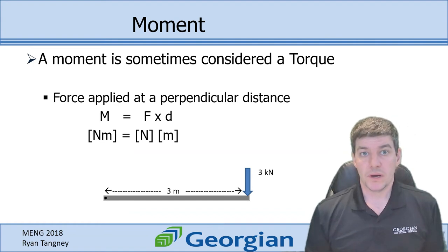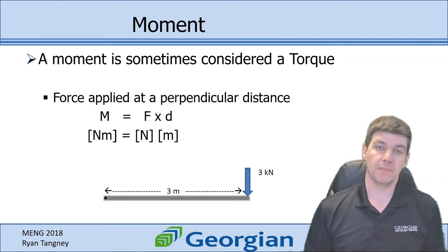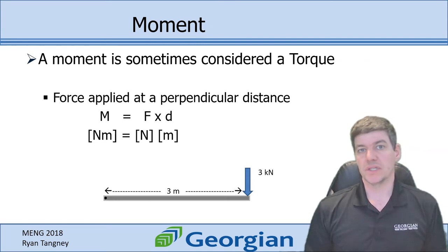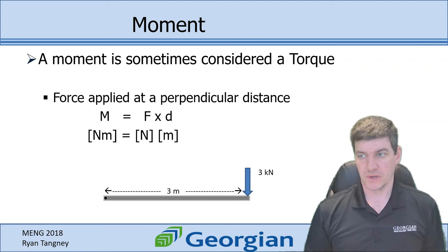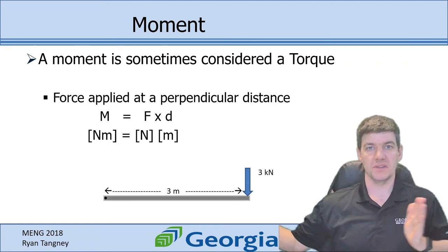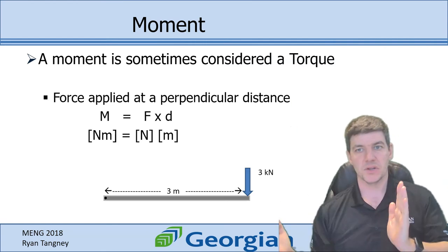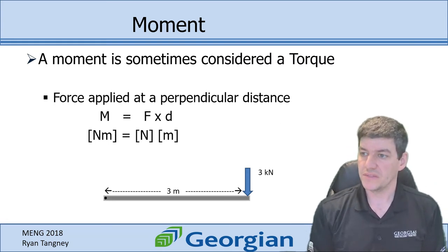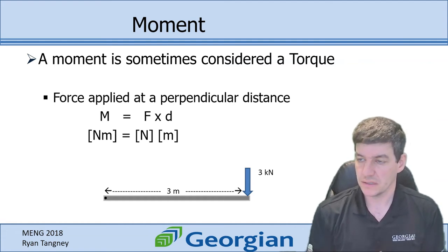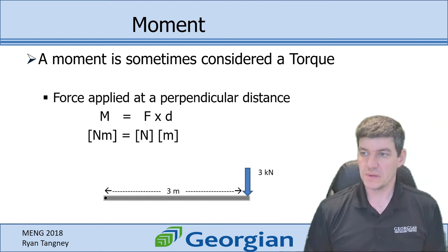We use forces when talking about beams, but we also use moments. Moments are similar to torque — a measurement of a force applied at a perpendicular distance, which tends to create a rotation. The greater the force, the greater the moment. Also, the further from a pivot point, the more effective that force is at rotating something. A moment equals force multiplied by perpendicular distance, with units of newton meters.